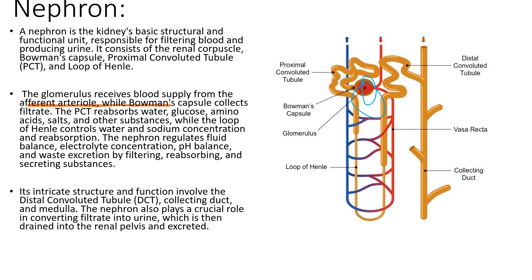After the Bowman's capsule comes the proximal convoluted tubule. This segment of the tubule is the region where most of the reabsorption happens. Reabsorption is a process in which nutrients such as glucose, amino acids, and water will be reabsorbed from the filtrate back into the blood, preventing them from being excreted in the urine. Because if these nutrients are excreted in the urine, the body will dehydrate rapidly and this could lead to several medical complications.